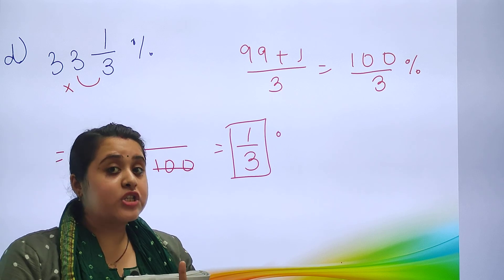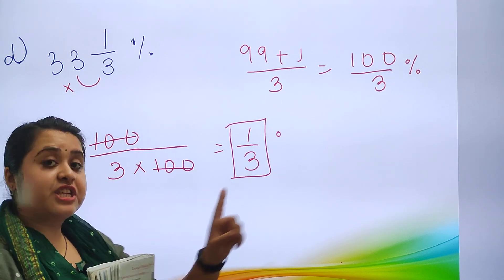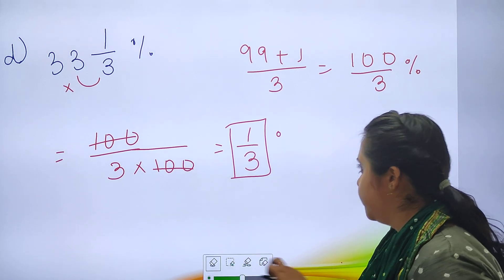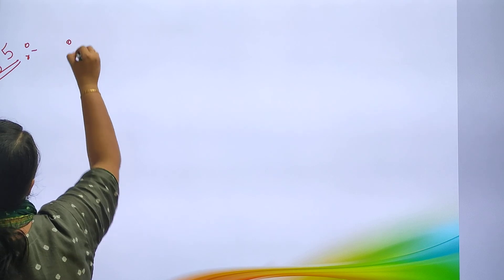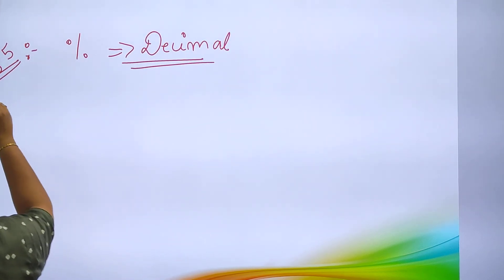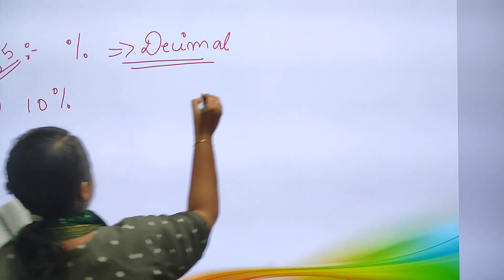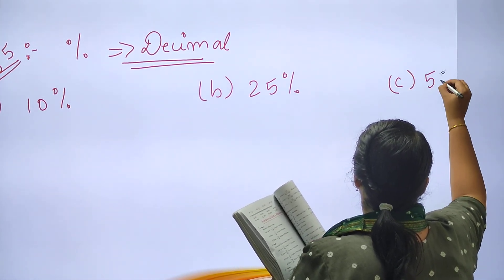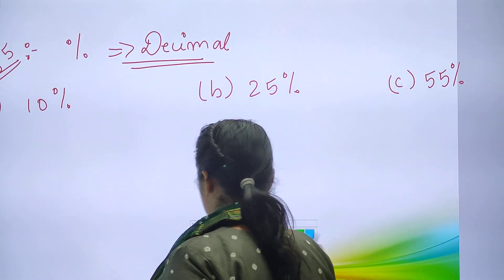Now let's move to the next question. Your question number 5 is on page number 96 of your textbook. Convert each of the following percentage into decimals. A: 10 percent, B: 25 percent, C: 55 percent.